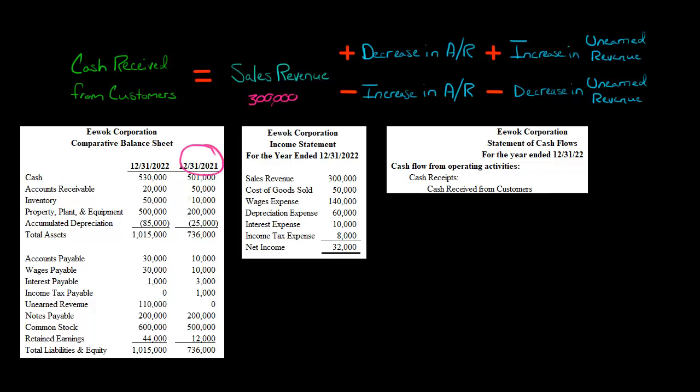Then we have to look at accounts receivable. Did it go up or down? Well, in 2021, we had that balance sheet date, the accounts receivable is $50,000, but then it went to $20,000. So it went down by $30,000. So that's a decrease in accounts receivable, so that's actually going to be added.